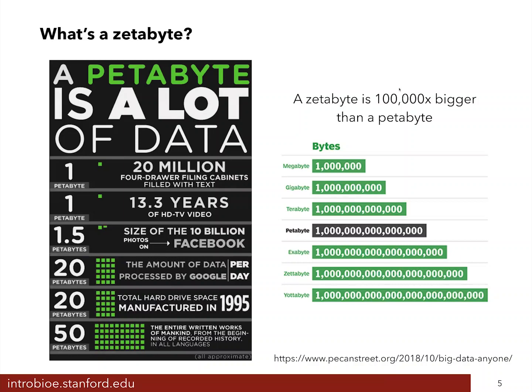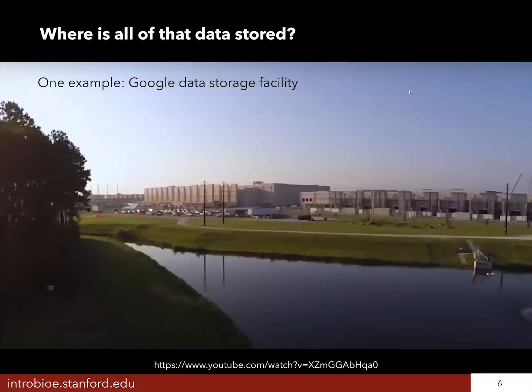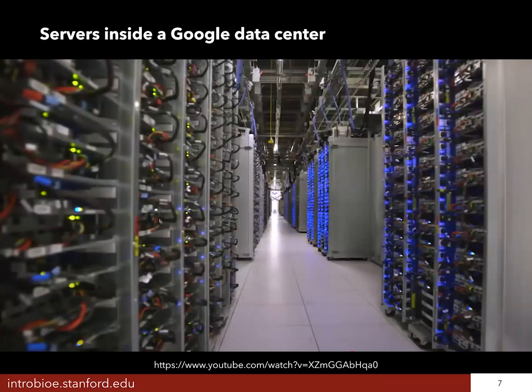So 33 zettabytes of data is a lot of data, and the question is, what do we do with all of this data? Where do we store it? Where do we keep our information as a society? Well, some data is stored in storage facilities that look like this — this is actually an image of a Google storage facility data center. You can click the link at the bottom of the slide to see a YouTube video where they walk you through this center. What you'll see are rows and rows of servers with hard drives storing information that you can query and access from Google's online interfaces. But when you're not looking at your Google doc or your Google photo, it's sitting there in one of these data centers just waiting for you to access it.